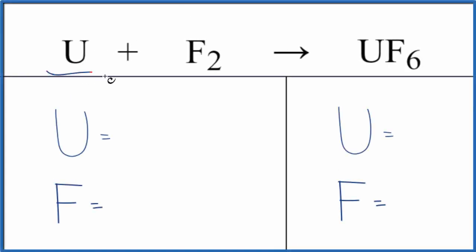Let's balance the equation for U plus F2 gives us UF6. This is uranium plus fluorine gas gives us uranium hexafluoride.